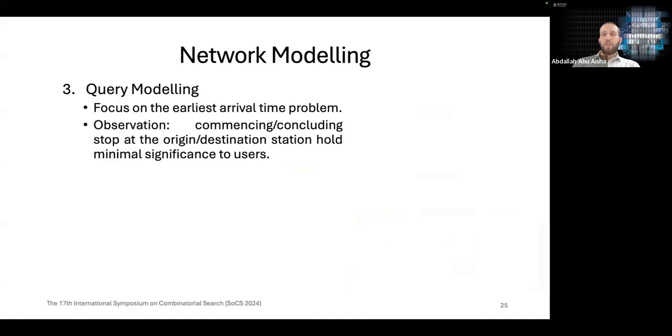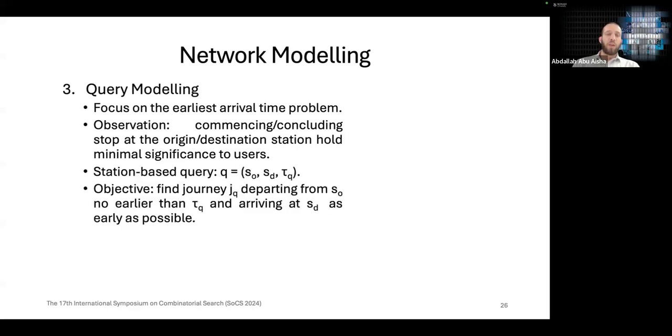Now in this paper we focus on the earliest arrival time problem. One observation is that users do not really care about what stop or platform they start their journey within the origin station. At the same time they also don't care about which platform they arrive at the destination station. Based on that we define our query on a station level. Our objective is to find a journey that departs from the origin station no earlier than some desired departure time and arrives at the destination station as early as possible. A journey in this case is a sequence of connections from the origin station to the destination station.